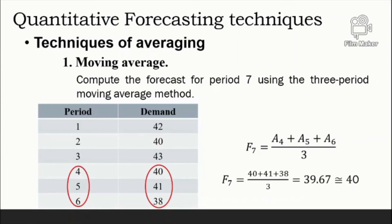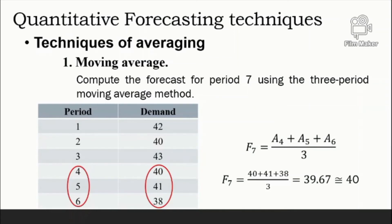In a moving average, as each new actual value becomes available, the forecast is updated by adding the newest value, dropping the oldest, and re-computing the average. The advantages are that it is easy to compute and understand. A possible disadvantage is that all values are weighted equally — in a 10-period moving average each has a weight of one-tenth, so the oldest value has the same weight as the most recent. To overcome this, the weighted moving average is used.